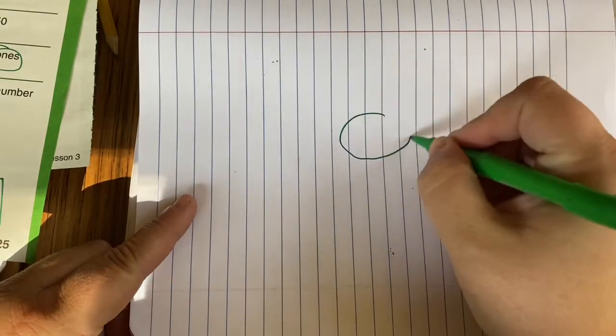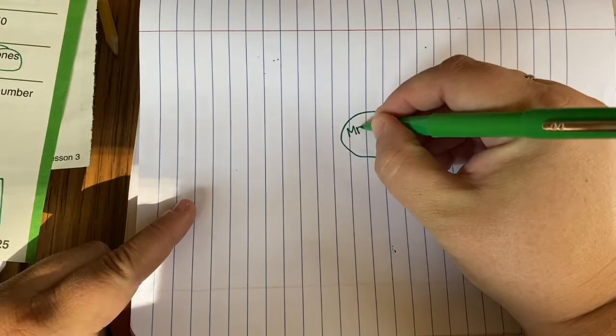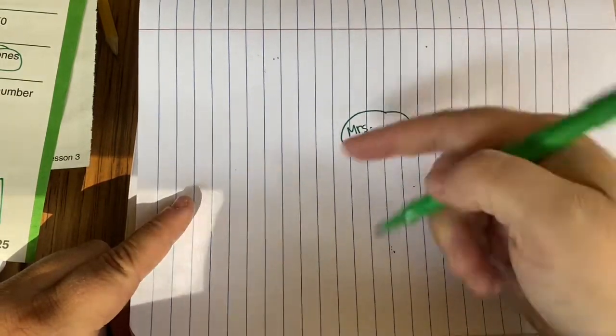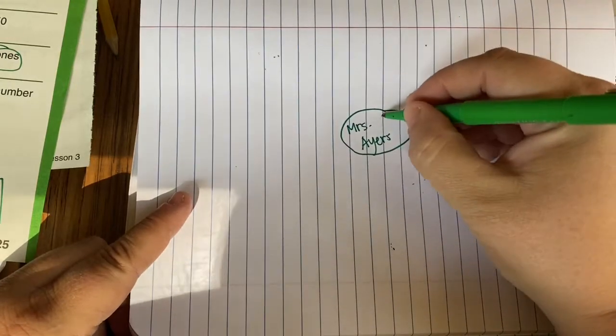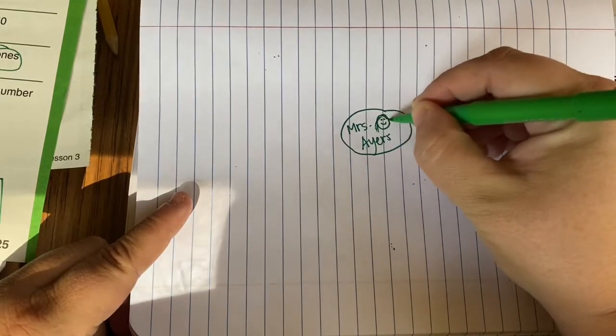We're going to draw a circle map. So in the middle, I'm going to draw a little circle and I'm going to put my name since I'm the topic of this circle map. You're going to write your name in the circle. I can draw a little picture of myself. I have kind of long, crazy hair.